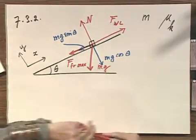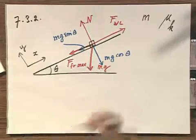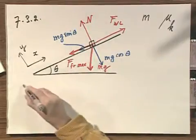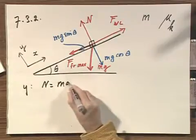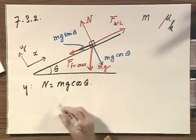All right, let's now look in the y direction. In the y direction, there is no acceleration. So you see immediately that N equals mg times the cosine of theta.